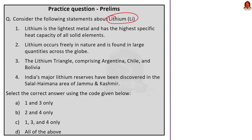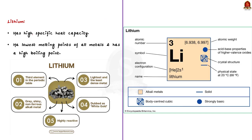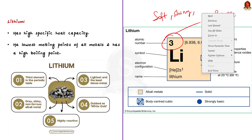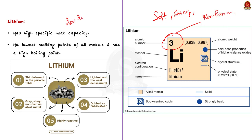In this question, they are asking about lithium. Lithium is the third chemical element in the periodic table. It is soft, shiny, and silvery white in color. It is a non-ferrous alkali metal with the lowest density compared to other metals. It is highly reactive and does not occur freely in nature. Lithium has a high specific heat capacity — the amount of heat required to change the temperature of a substance by one degree. Lithium has the lowest melting point of all metals and a high boiling point.